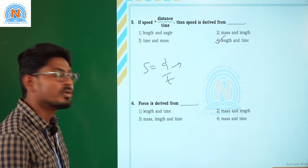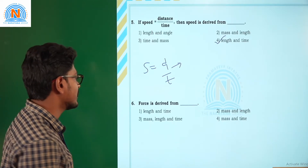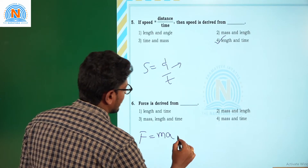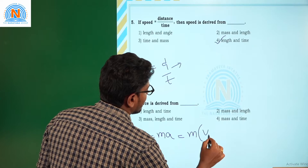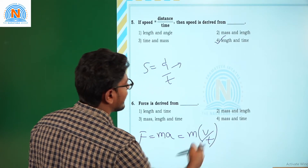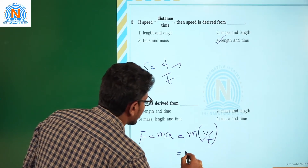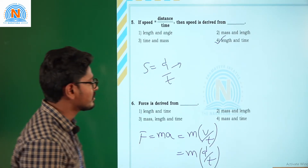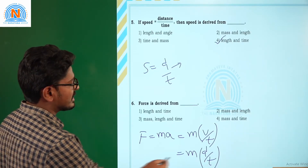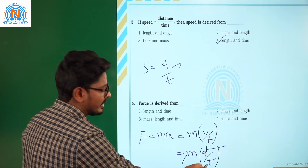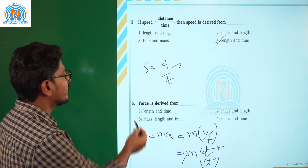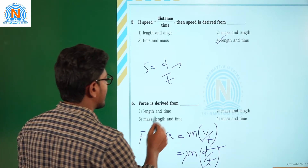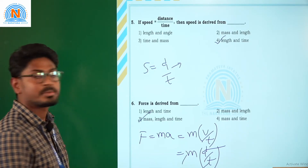Question 6: force is derived from — ? Force F equals M into A, which is M into V upon T, and velocity is displacement upon time. So force is depending upon mass, length, and time. Force is derived from mass, length, and time, and the correct option is option number 3.